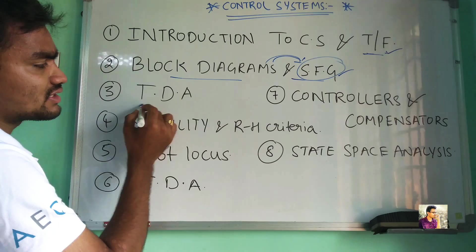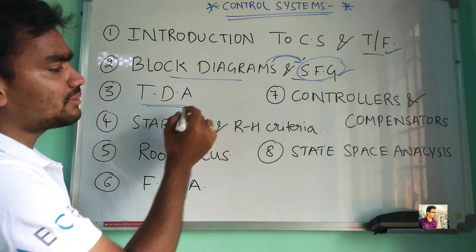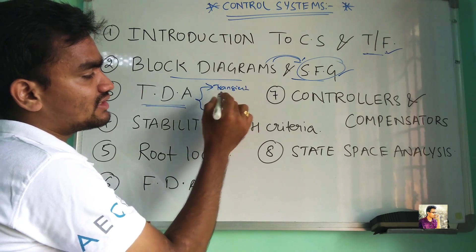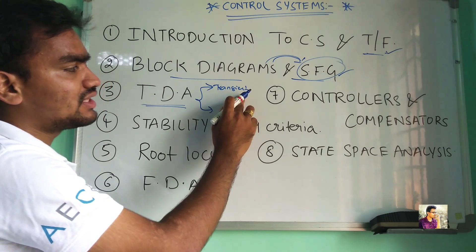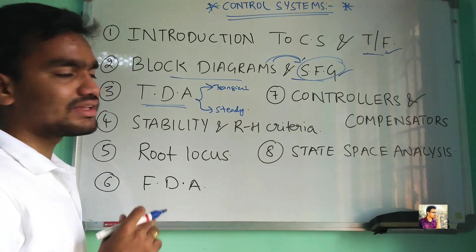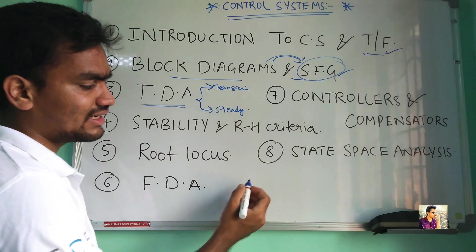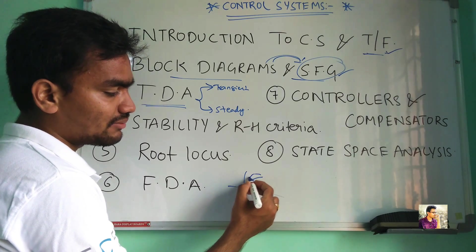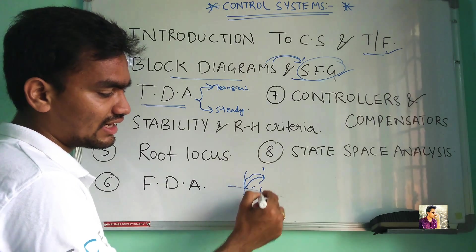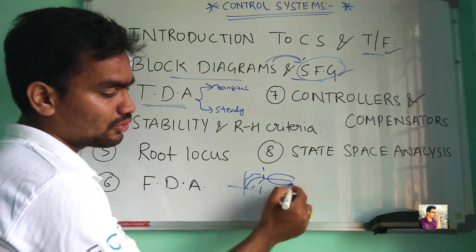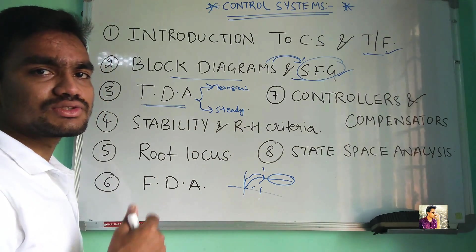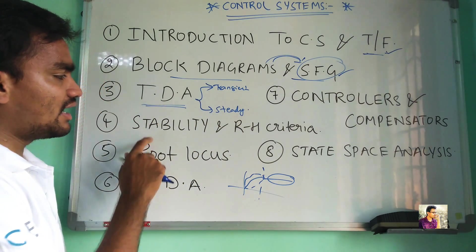Next we are going to discuss about time domain analysis, which is a very important concept. In this we are going to discuss about steady state analysis and the transient state — that is, at time t equal to zero, we observe the transient states. The steady state analysis is when the system is in steady state, that is at t equal to infinity. Initially it will take some time for the system outputs to reach a stable state — this is the transient analysis — and after some time it will saturate or remain in the same state, which is called steady state analysis.